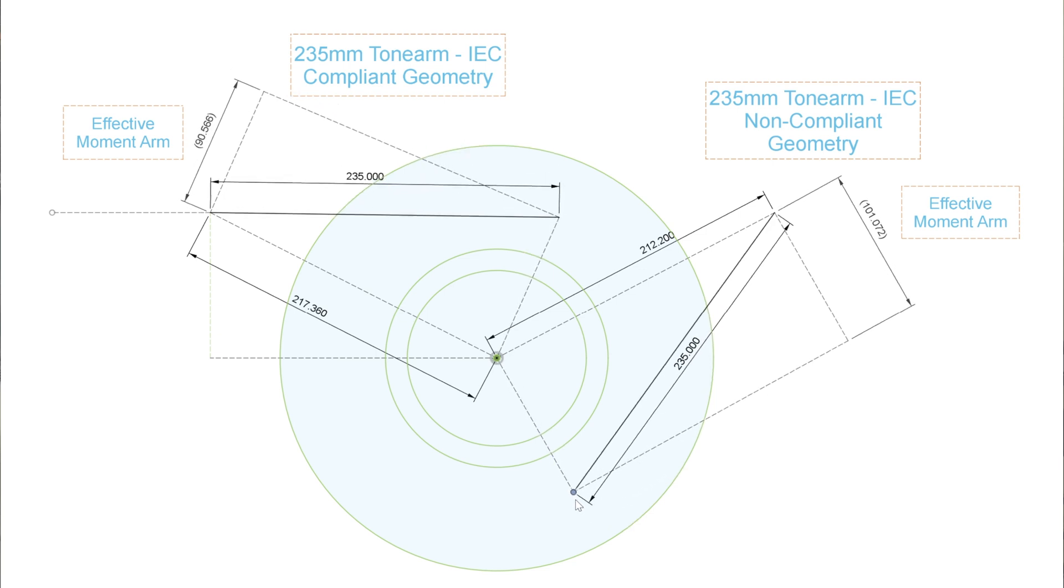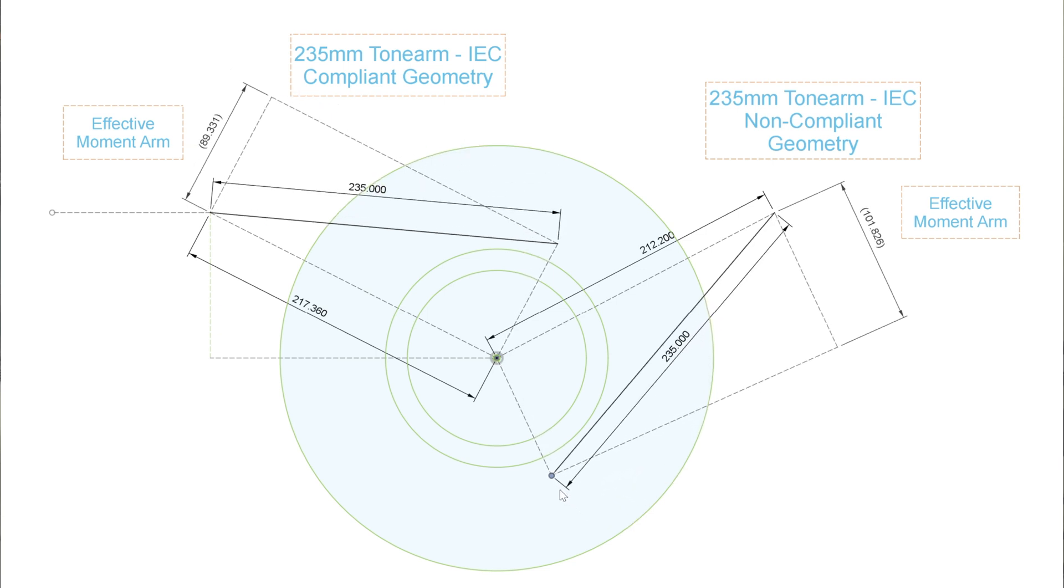And then they go down to their minima somewhere around here. And as you can see, there's now an 11 plus percent difference between the two. Again, with the non-compliant tone arm being more powerful skating force.